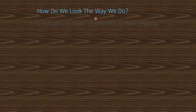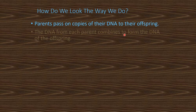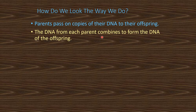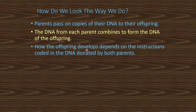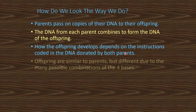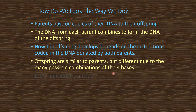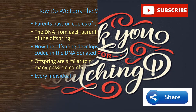How do we look the way we do? Parents pass on copies of their DNA to their offspring. The DNA from each parent combines to form the DNA of the offspring. How the offspring develops depends on instructions coded in the DNA donated by both parents. Offspring are similar to parents but different due to the many possible combinations of the four bases.